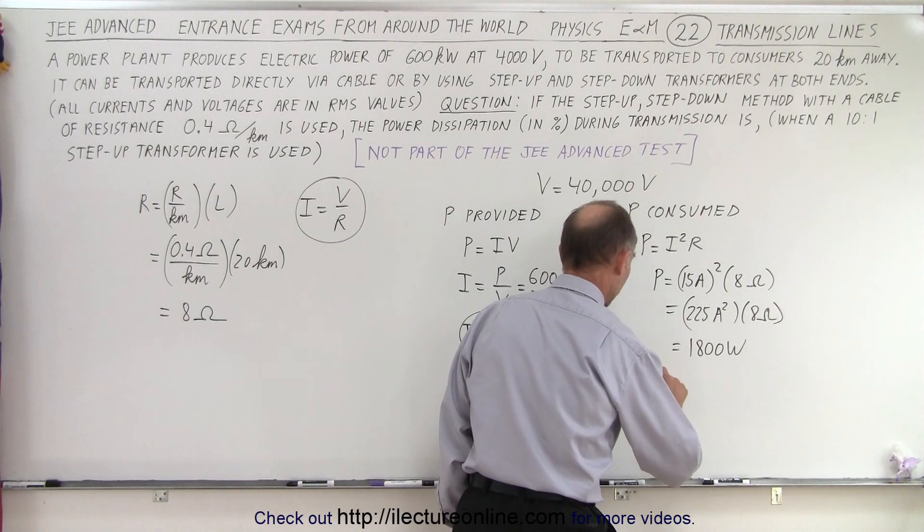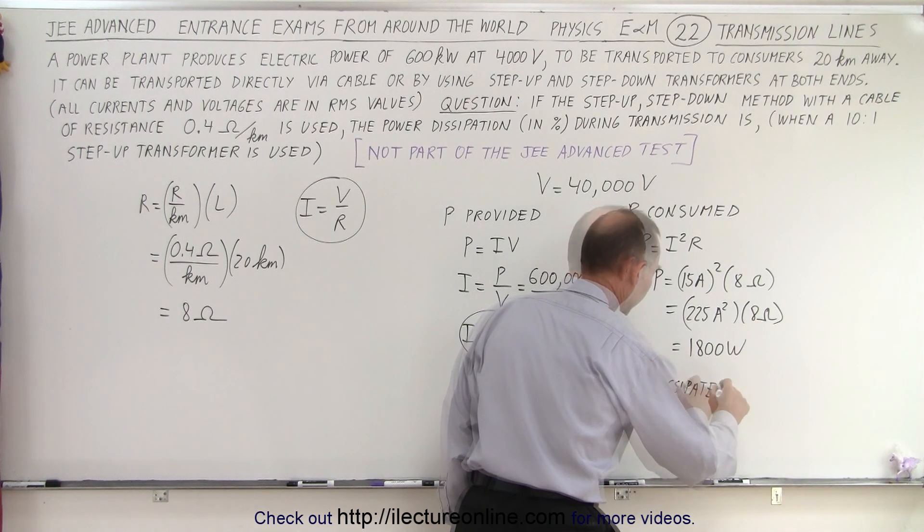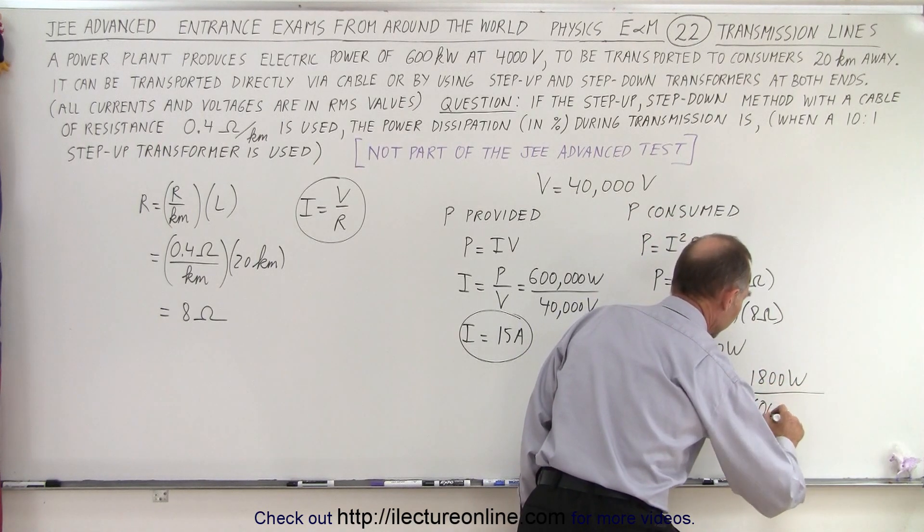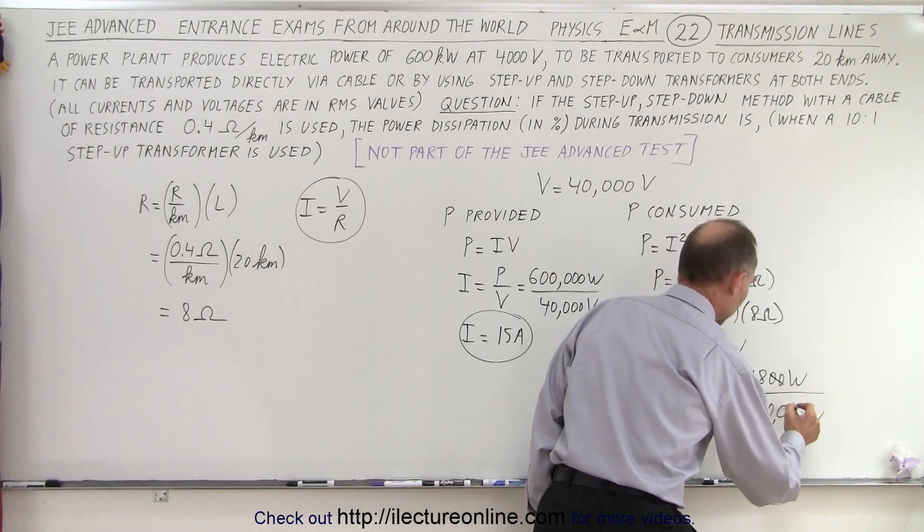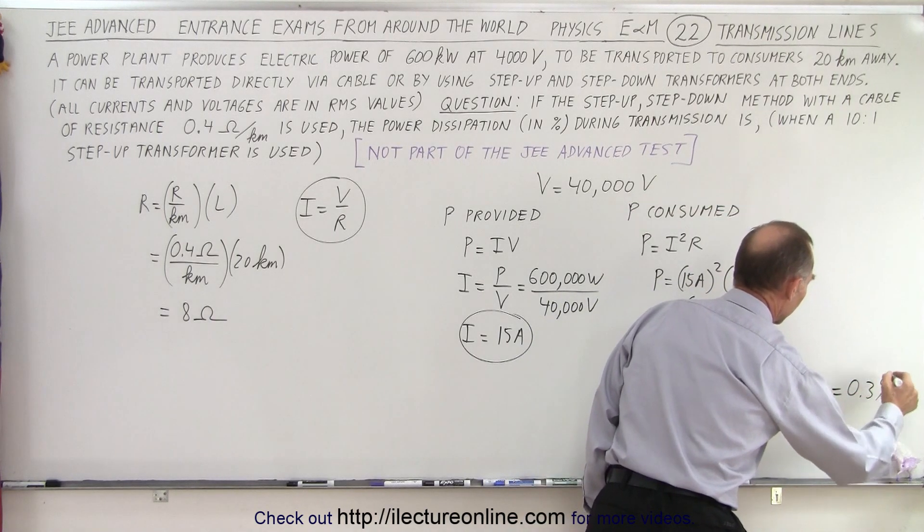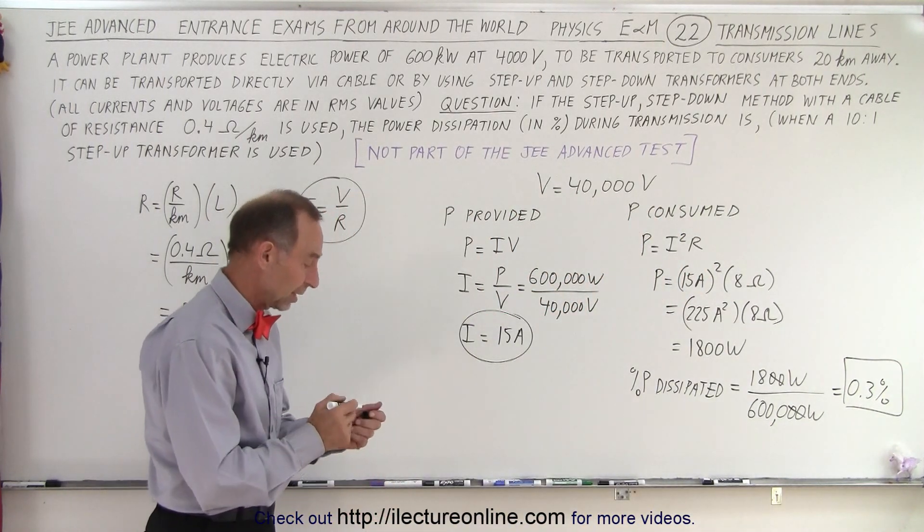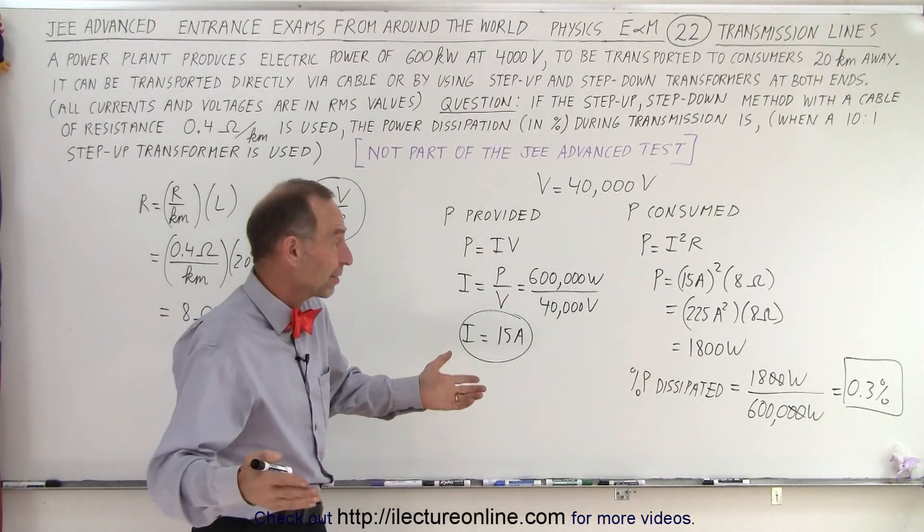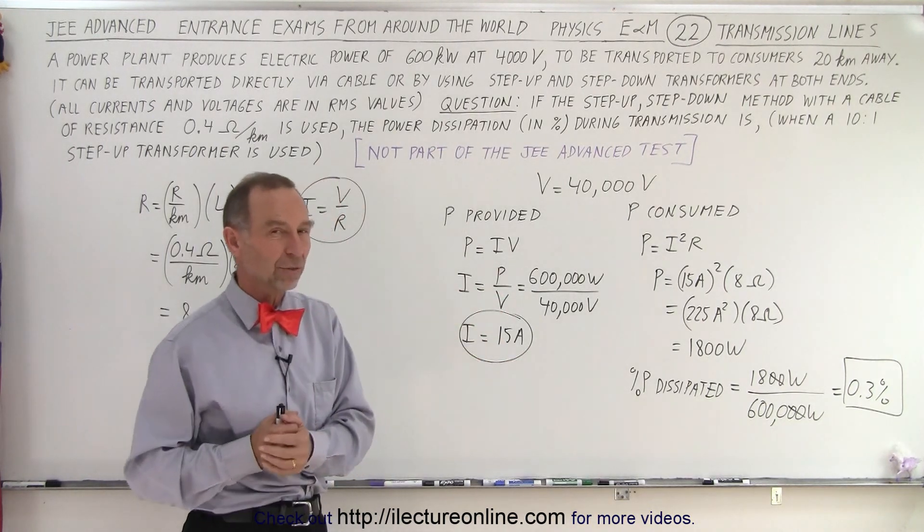And so the power dissipated, or the percent power dissipated, is equal to the 1,800 watts that we lose, divided by the 600,000 watts that we're providing to the customer. Two zeros go away, that's 0.3 percent. So we've dropped it down to just a fraction of the percent of power that's being transported is being lost. Now we're only losing 1,800 watts. That's essentially the amount of power needed for an electric space heater, while you're transporting a total of 600,000 watts across the lines.